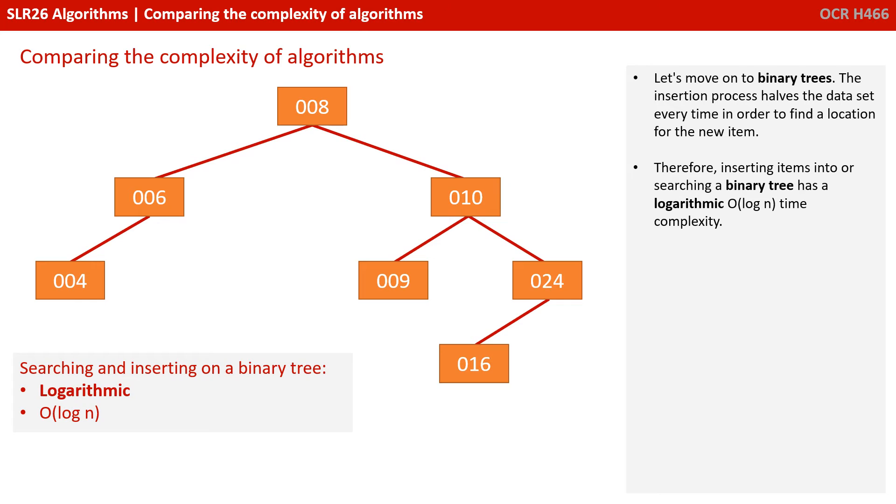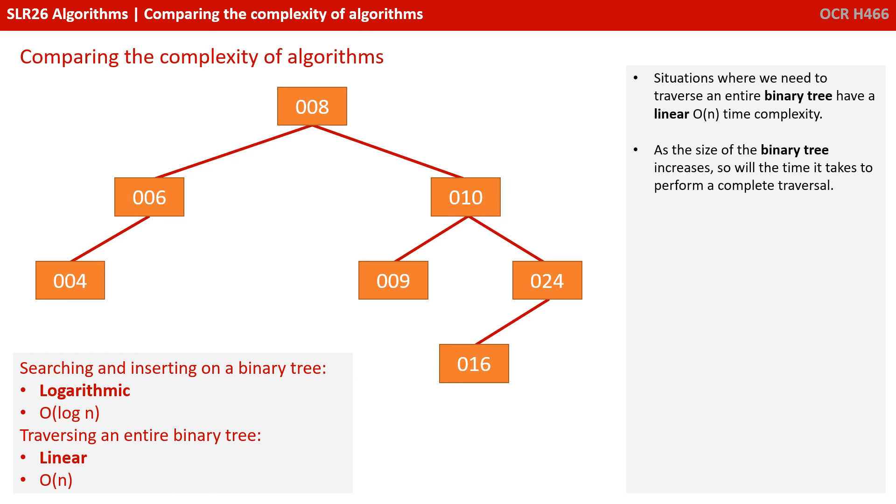Let's move on to binary trees. The insertion process halves the dataset every time in order to find a location for the new item. Therefore, inserting items into or searching a binary tree has a logarithmic time complexity. Situations where we need to traverse an entire binary tree have a linear time complexity. As the size of the binary tree increases, so will the time it takes to perform a complete traversal.